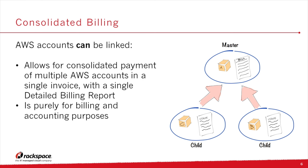You would use consolidated billing when running multiple AWS accounts and wanting a single bill with a single payment method, while still tracking each account's charges. For example, you may have multiple projects each in their own AWS account, multiple cost centers to track, or you may have acquired a new company and want to integrate their AWS infrastructure slowly while picking up the billing through your existing payment method.